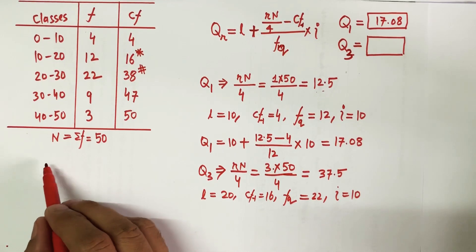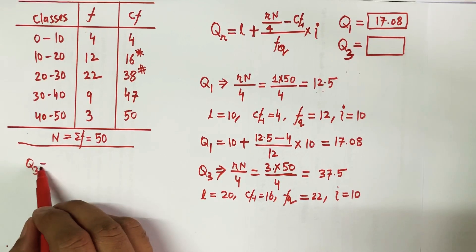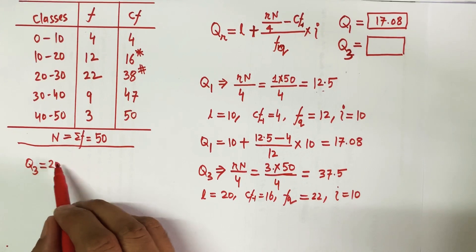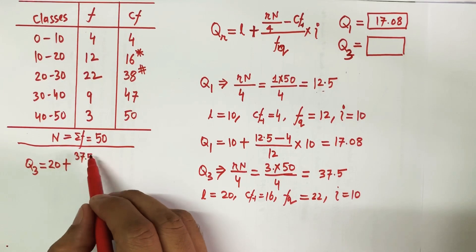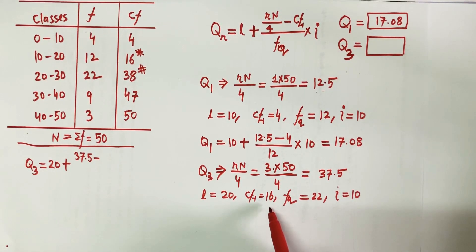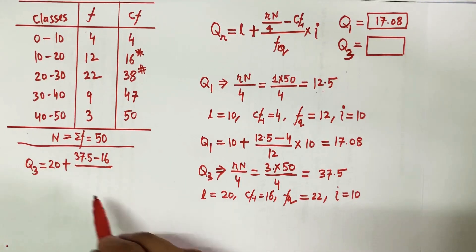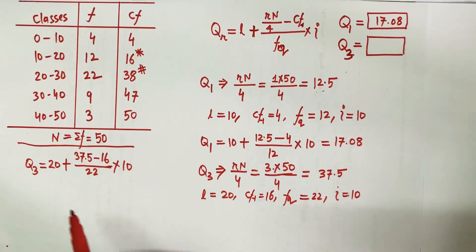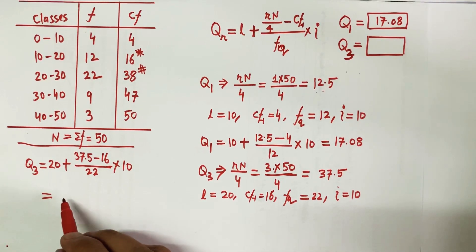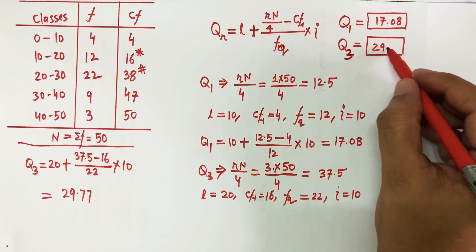The class width is 10. Applying the same formula: Q3 = 20 + (37.5 − 16) / 22 × 10. Calculating this gives Q3 = 29.77. So in the box goes 29.77.